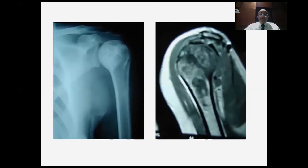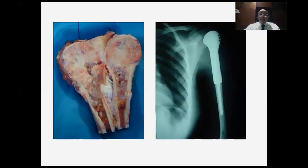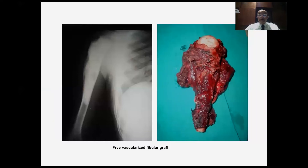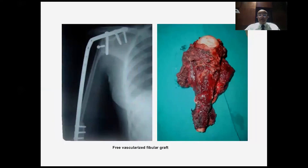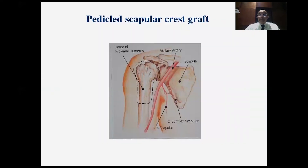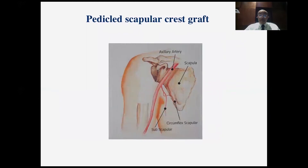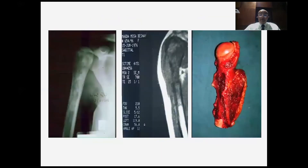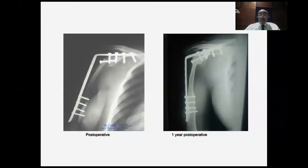We begin with the humerus. This is an osteosarcoma of the proximal humerus after resection and reconstruction with a modular prosthesis. This is another osteosarcoma of the proximal humerus reconstructed with a vascularized fibular graft — you can see how the fibula hypertrophies with time. Another technique is the pedicled scapular crest graft, which is the lateral border of the scapula based on the circumflex scapular vessel, used here to reconstruct the proximal humerus, with a visible shoulder fusion.